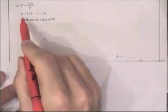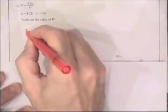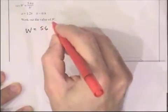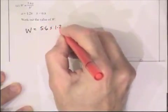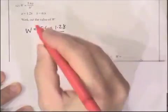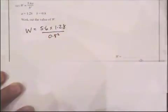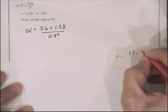The last part of question 5 gives us a substitution. It gives a formula and the values of a and b. So we copy out the formula, but instead of the a and b we write out the values. So it's w equals 5.6 times 1.28, then divided by b squared. But you don't write b squared, you write 0.8 squared. Then you just put those numbers in the calculator. You end up with 11.2.